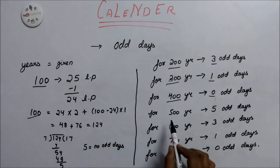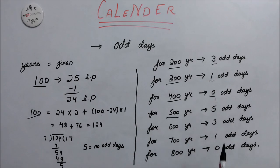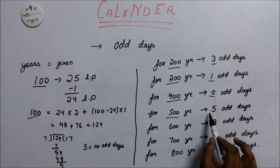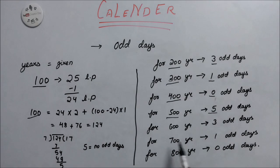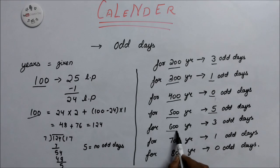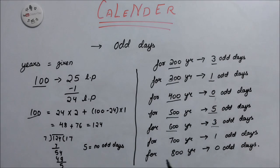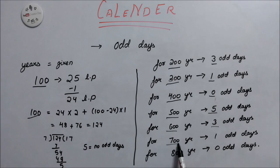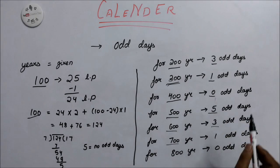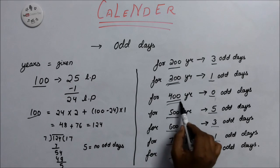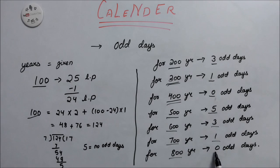100 and 500 have the same number of odd days. 600 and 200 have the same number of odd days. 700 and 300 have the same number of odd days. 800 and 400 have the same number of odd days.